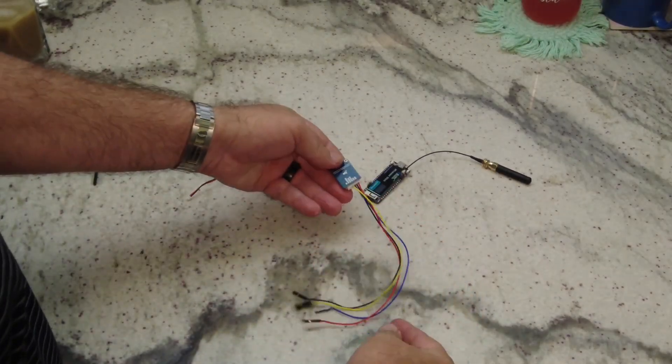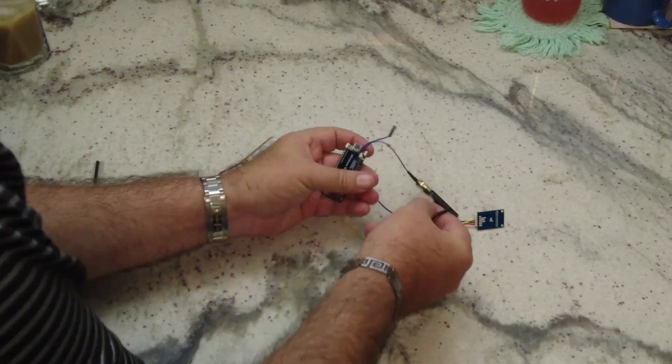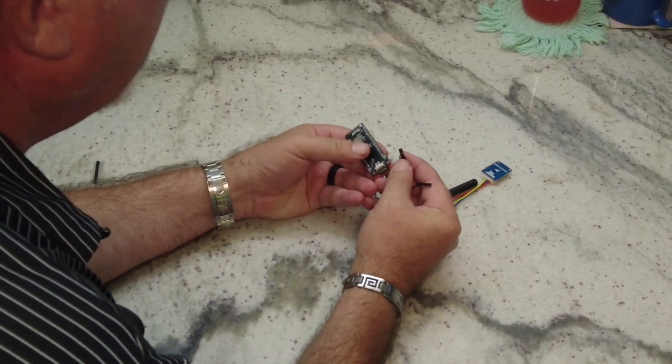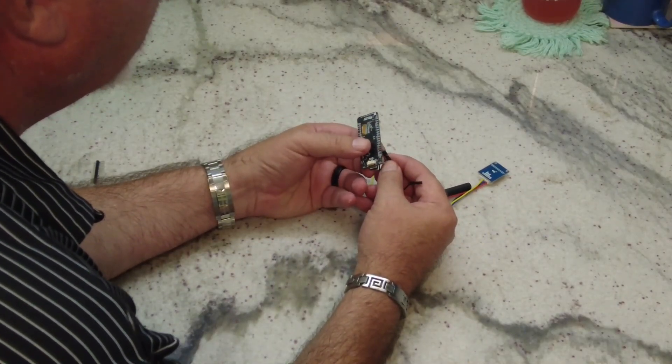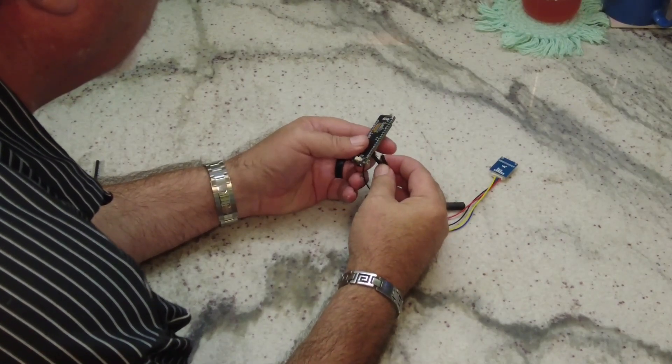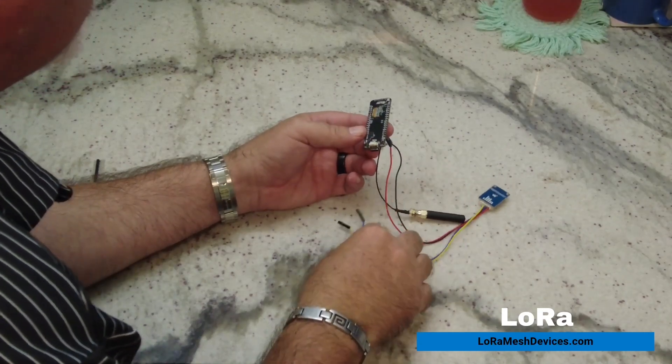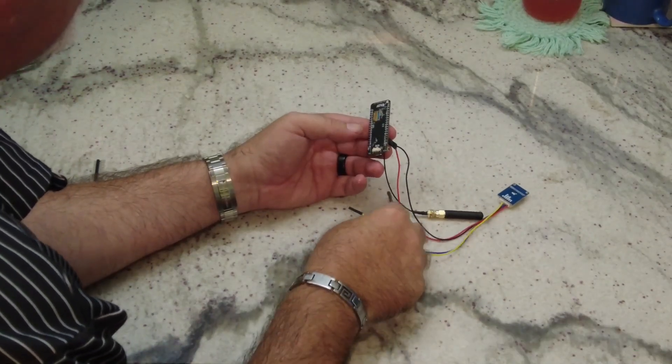Now I'm going to connect the little environmental monitor to those pins that I soldered. So let's see. 3.3 volts, ground. There we go, ground wire.